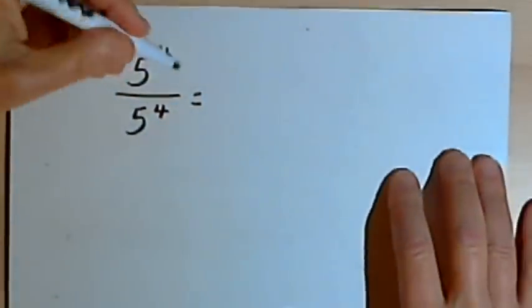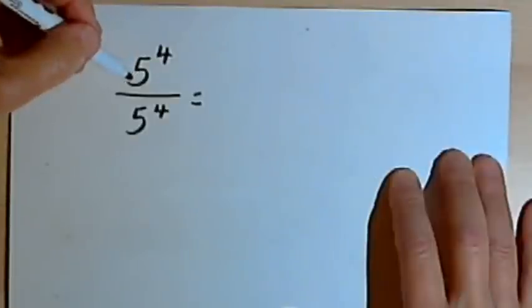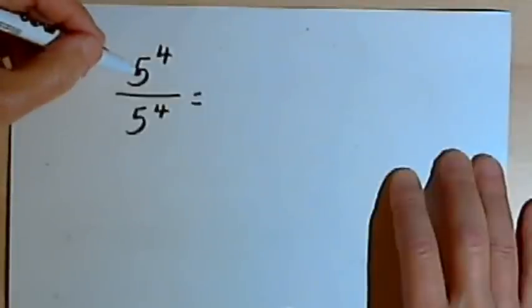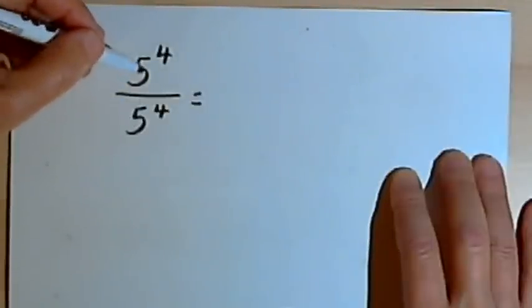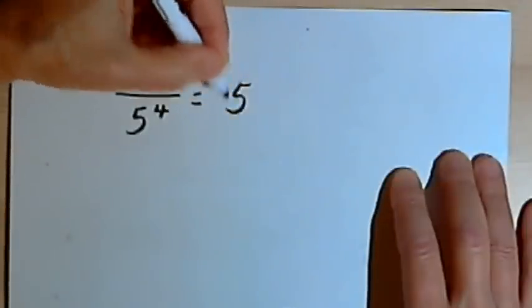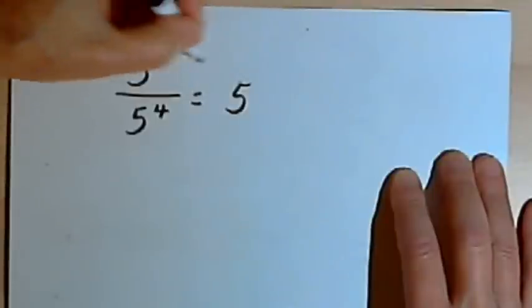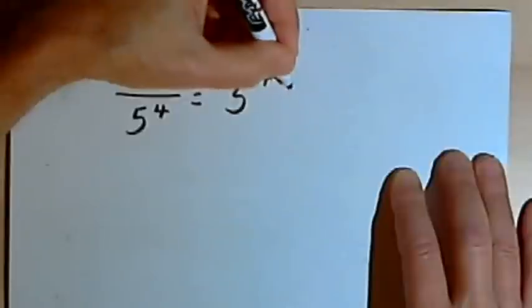I've got a fraction, 5 to the fourth over 5 to the fourth. Now if you've learned about dealing with fractions that have exponents, you know that if the bases are the same in the numerator and the denominator, like the 5 that I have here, we take that base, and the power we're going to have is the exponent in the numerator minus the exponent in the denominator.